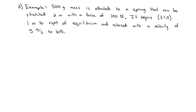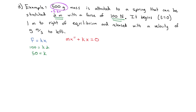First, we need the spring constant. We know force equals k times distance, so 100 equals k times 2, meaning k equals 50. Next, our differential equation is mass times x double-prime plus k times x equals zero. The mass is 500 grams, which must be converted to 0.5 kilograms. So we have: 0.5 x double-prime plus 50x equals zero. This is the differential equation we want to solve to find our harmonic motion.